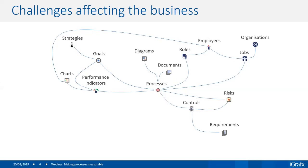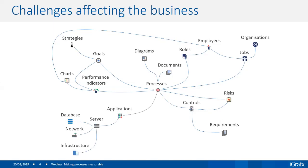Controls can also be linked directly to processes as business rules — for example, four-eyes principle or management sign-off. Also becoming increasingly important are applications: applications run on servers, databases, networks, and a whole infrastructure — all linked back to your processes. It's also important to understand the impact of external factors — external agents like clients, suppliers, and any institutions we communicate with.